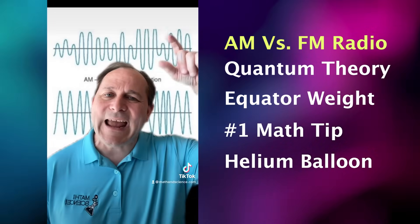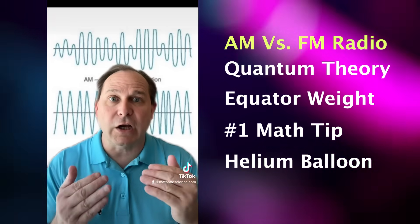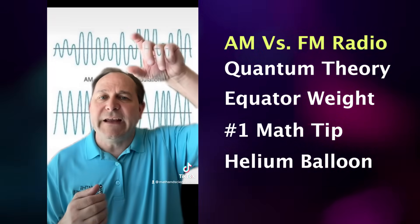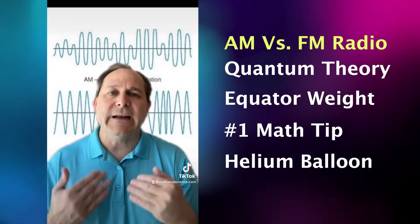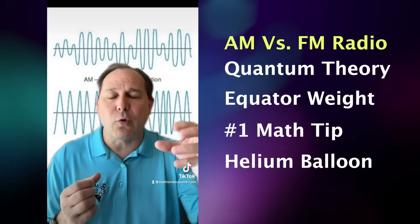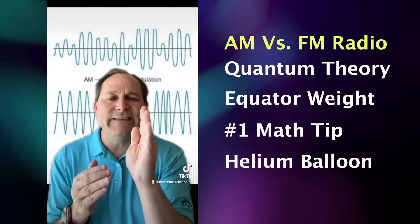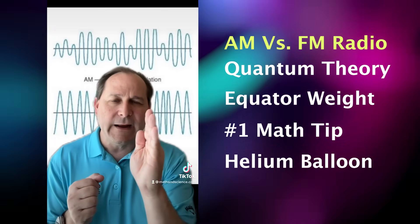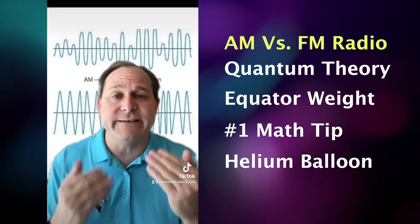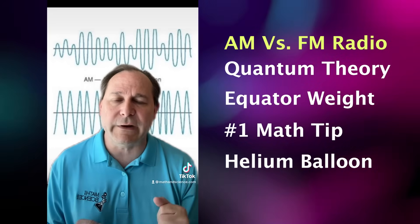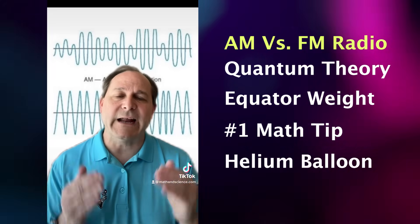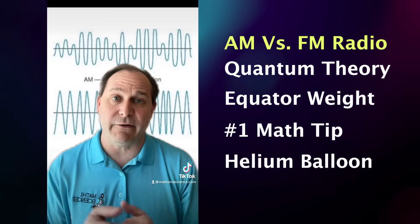So in the AM case, when I talk louder then quieter, it changes the height of the wave. But in FM, as I talk louder then quieter, it slightly shifts the frequency in time in lockstep with the actual voice you're trying to transmit. And that's how it's transmitted and the information is carried differently.